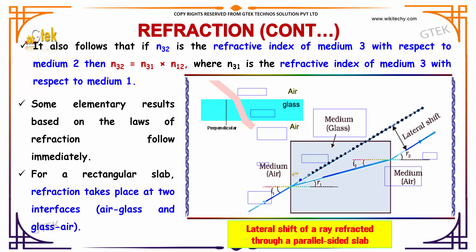Some elementary results based on the laws of refraction follow immediately. For a rectangular slab, refraction takes place at two interfaces: air and glass, and glass and air.